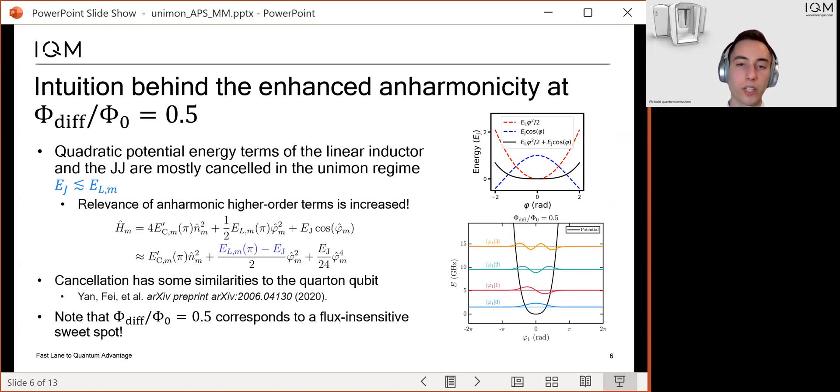This can also be seen from the figures that illustrate the potential energy of the Unimon as a function of the Josephson phase. This cancellation effect has some similarities to the quarton qubit introduced by Will Oliver's group a few years back.